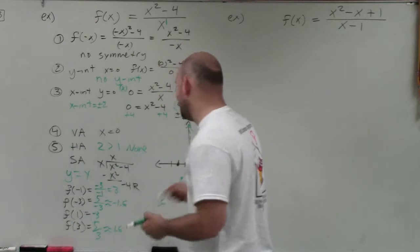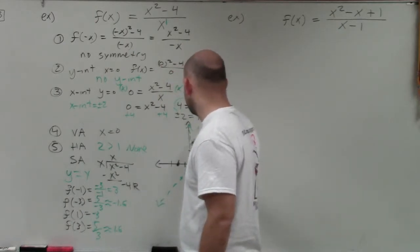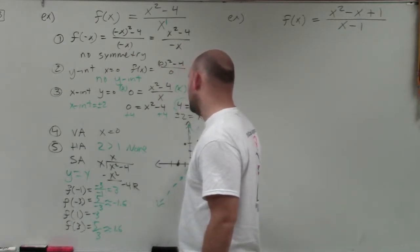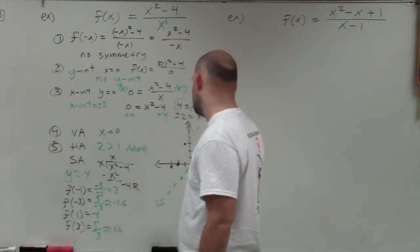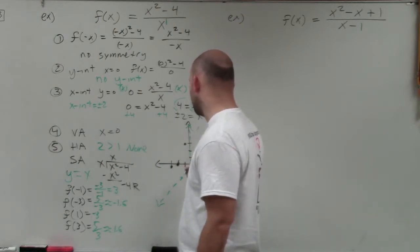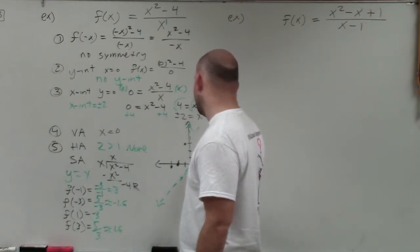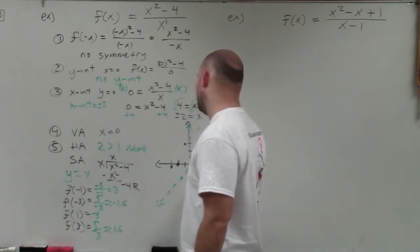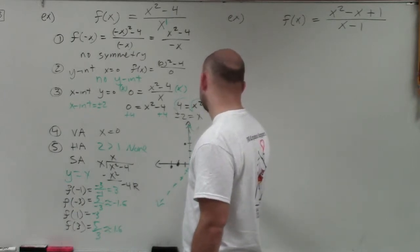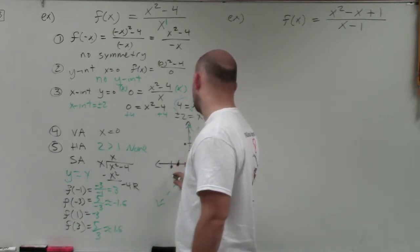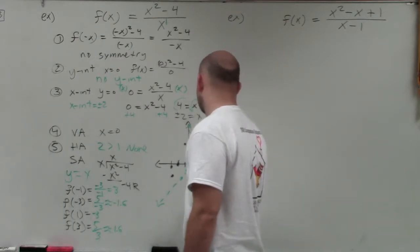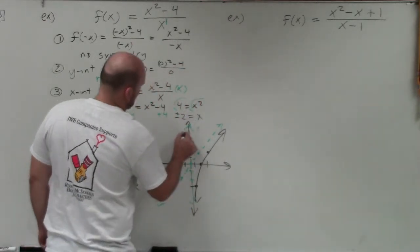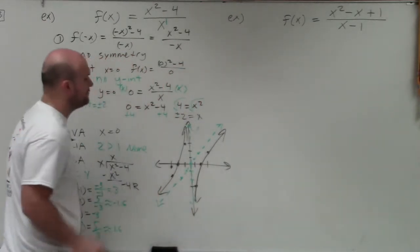Let's plot these points. At negative 1, I'm up at 3. At negative 3, I'm at approximately negative 1.6. At negative 2, I'm at 0. At positive 1, I'm at negative 3. At positive 3, I'm at approximately 1.6. What you can see is the graph takes the shape of a hyperbola.